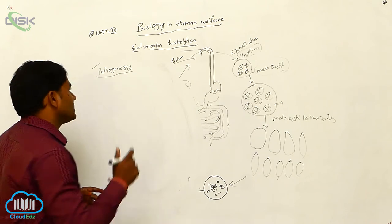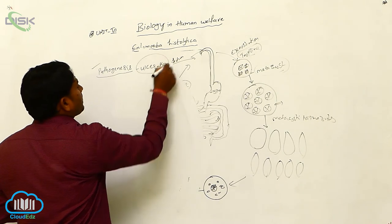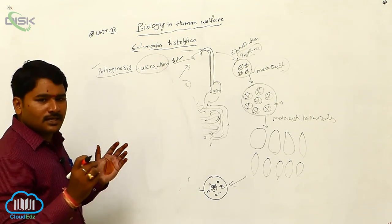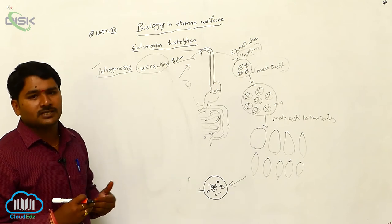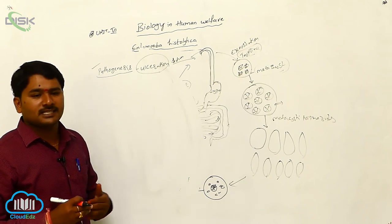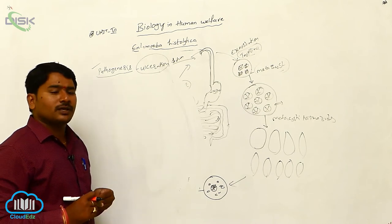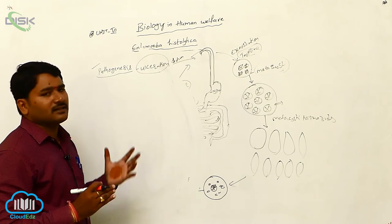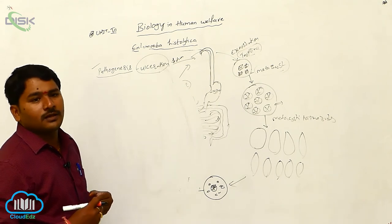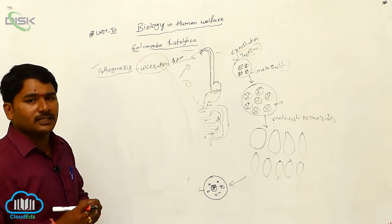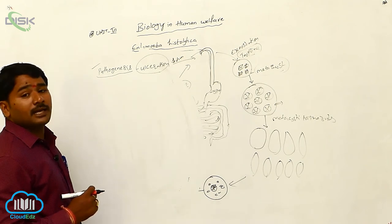They damage the mucosa and submucosa, damaging the tissue, so blood and mucus come outside. This causes ulceration or ulcers. When blood and tissue debris appear, the parasite feeds upon blood cells, tissue debris fragments, and bacteria present in the intestine. RBCs ingested into food vacuoles allow the trophozoites to be identified. This is called primary amoebiosis.